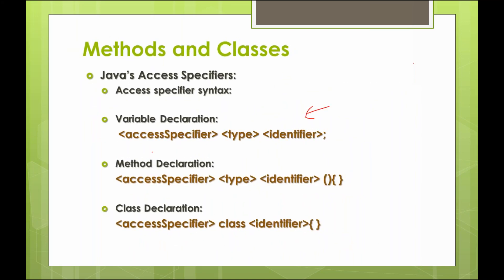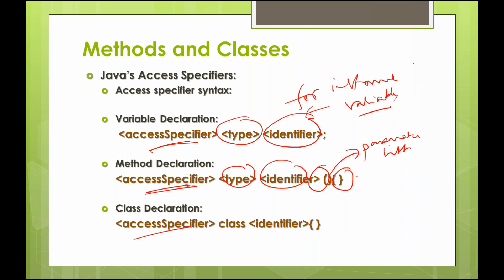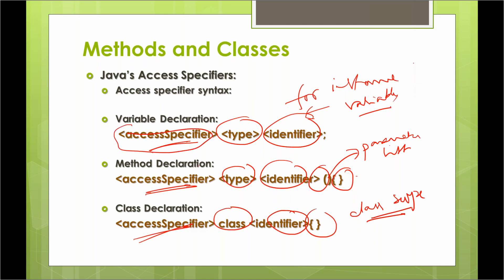How do we declare access specifiers? First we specify the access specifier, then the type, then the identifier — this is for instance variables. For method declaration: access specifier, return type, identifier, open-close parentheses, parameter list, then the method scope. For class declaration: access specifier, class keyword, then identifier, then class scope. Notice that everywhere the access specifier precedes the rest of the member specification.